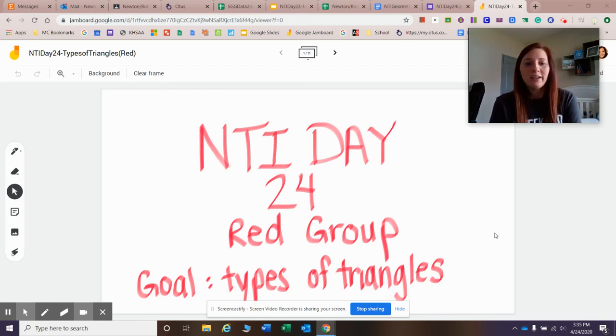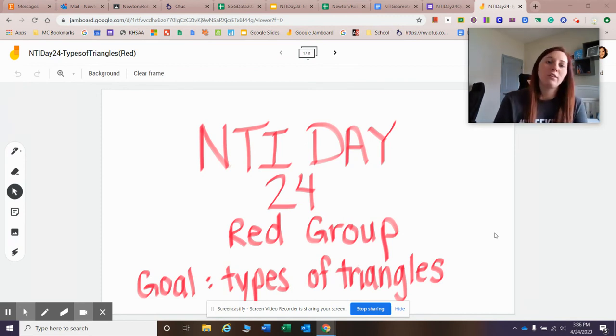What's up, Red Group? It is Monday, NTI day 24, and you guys have been learning about geometry. First, you looked at the different types of shapes, 3D and 2D, and then we were able to classify them and partition the shape. And then on Thursday, you guys got to look at different types of angles. Well, today you get to look at different types of triangles, and you have to use your knowledge about different types of angles to classify these triangles. So let's get started.